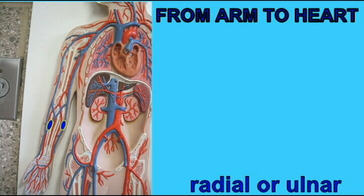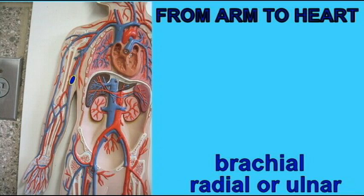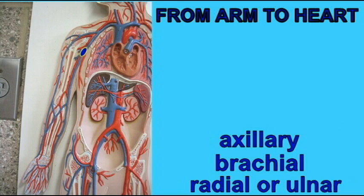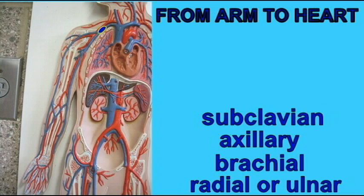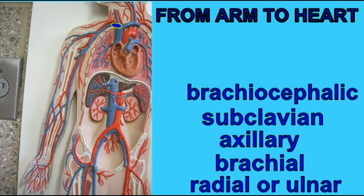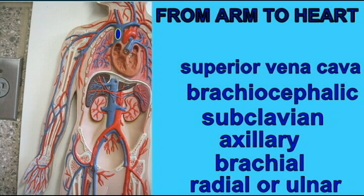Although there are multiple routes from the hand back to the heart, one has similar vessels as the first route. From the ulnar vein on the medial side or the radial vein on the lateral side, blood can travel through the brachial vein, to the axillary vein, to the subclavian vein, into the brachiocephalic vein, to the superior vena cava, to the right atrium.